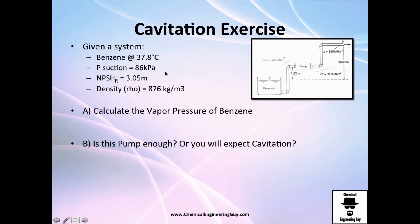A typical example on cavitation: given a system which is fixed, we have this point right here, we have loss of friction right here, the loss of friction of this pipe section, the final pressure here, this height, and this height as well. So they tell you, given a system that uses benzene at this temperature, 37.8 Celsius.